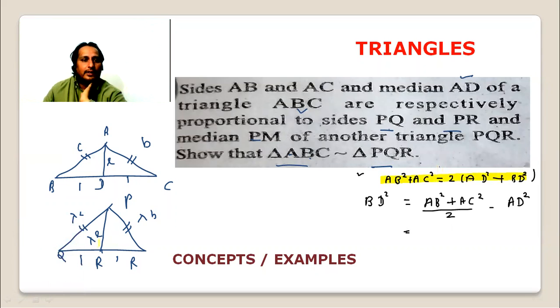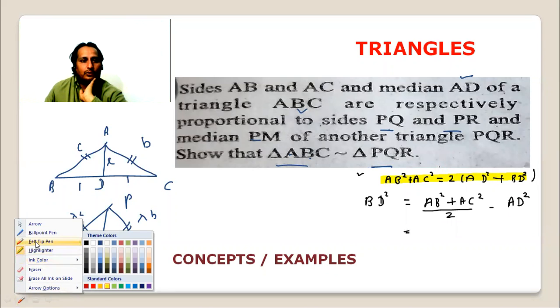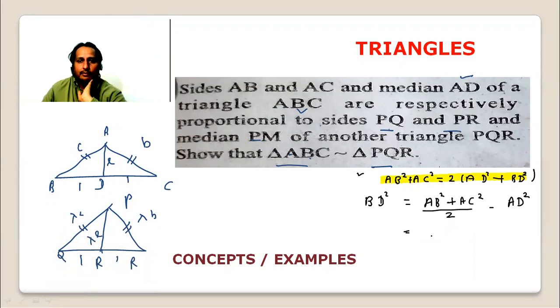If I want to calculate BD here, I have AB which I've named c squared plus AC which is b squared minus AD which is l squared, all divided by 2. So BD square is coming as c squared plus b squared minus 2l squared over 2.